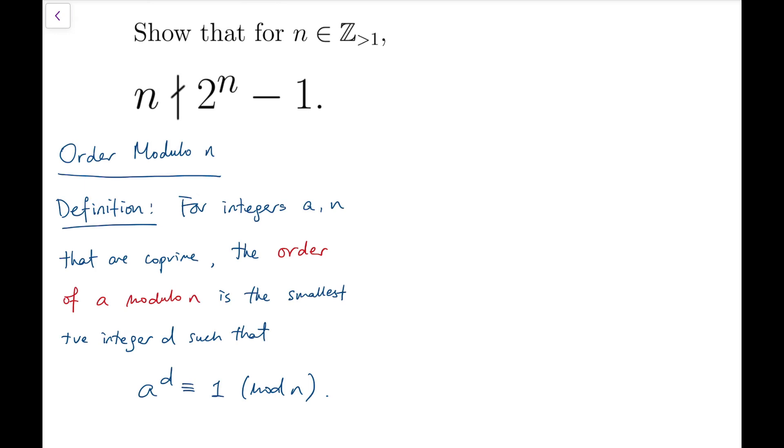The concept that is going to help us prove this statement is called order modulo n. For integers a and n that are co-prime, the order of a mod n is the smallest positive integer d such that a to the power d is congruent to 1 mod n.